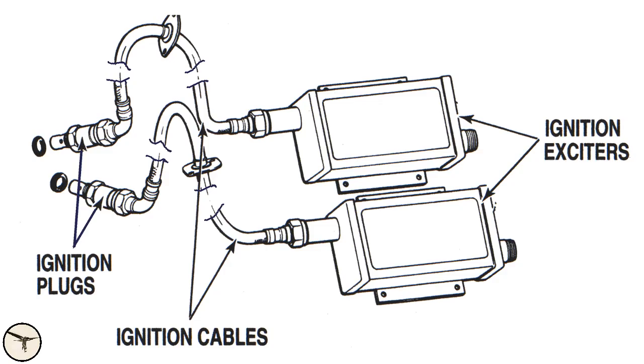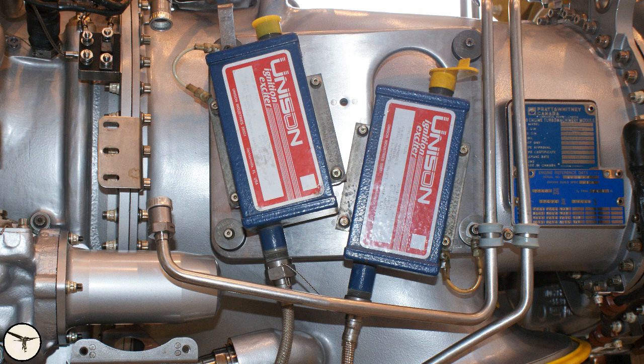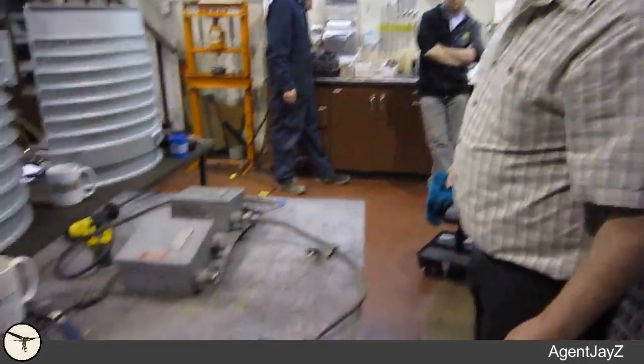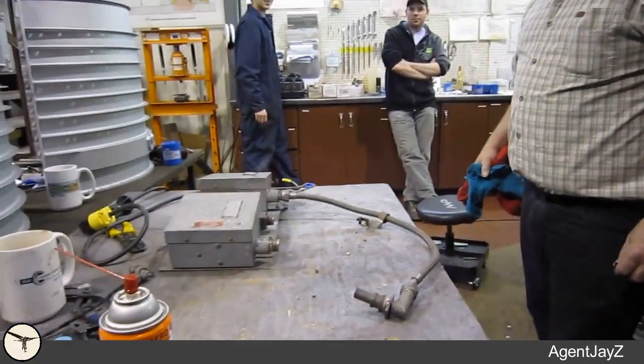The ignition system is used to start the engine. It requires 28 volts DC but can operate on 10 to 30 volts. The system consists of two ignition exciters (A and B), two ignition cables and two igniter plugs. The exciter delivers 8000 volts — this is serious stuff, as demonstrated by comparing a jet igniter spark to a car spark.